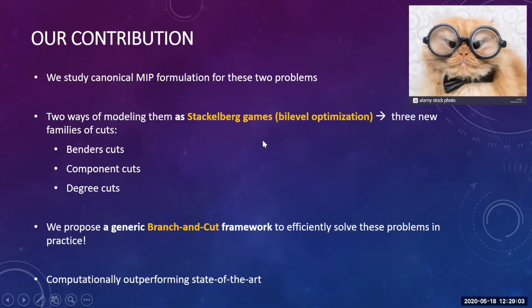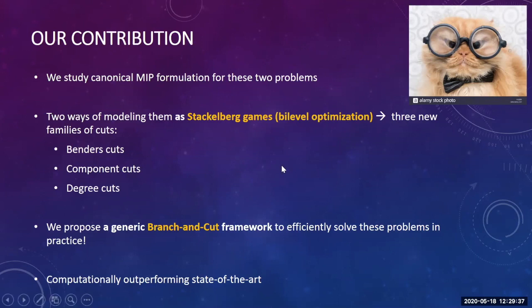Our contribution in a nutshell is the following. We propose two novel ways of modeling the problem as a Stackelberg game, and by using the tools of bi-level optimization, we introduce three new families of cuts: Bender's cuts, component cuts, and degree cuts. We propose a generic branch-and-cut framework to efficiently solve this problem in practice, and we show that we are able to computationally outperform state-of-the-art methods available in the literature.